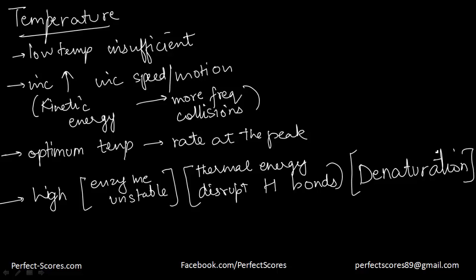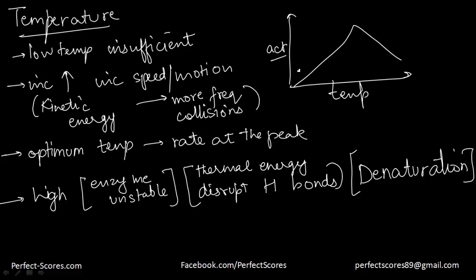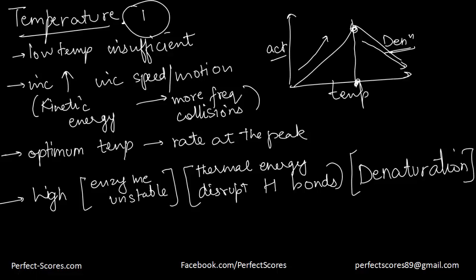If you draw a graph of activity versus temperature, it increases slowly up to the optimum temperature, which is the peak of activity, and then it starts decreasing as denaturation occurs. That is factor number one. Factor number two that affects enzyme activity is pH.